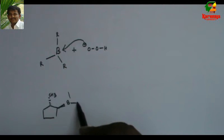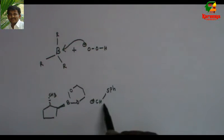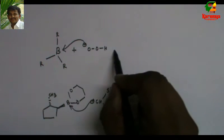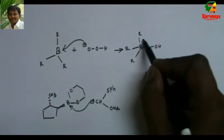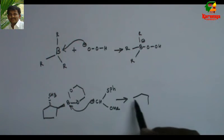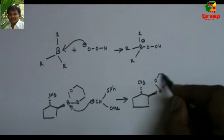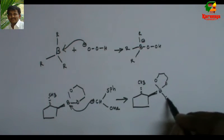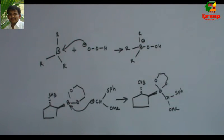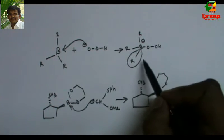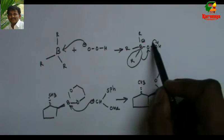Here it is lithium anion. This attacks here. So what we get is an intermediate. Similarly we get an intermediate like this. Then what happens here? The R group migrates here. And this OH is the leaving group.